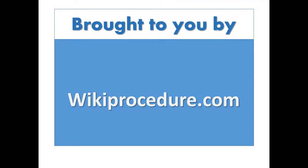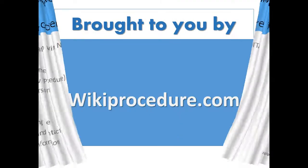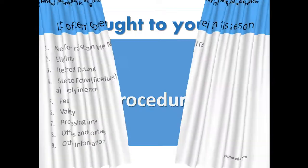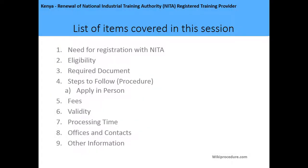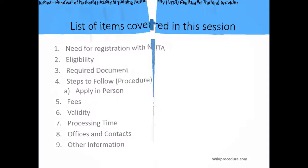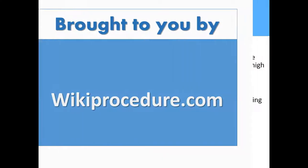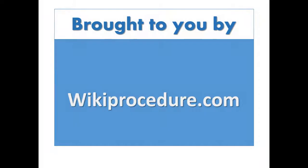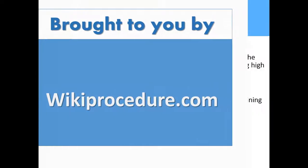We will also cover fees, validity period, the processing time, office location and contact information, and any other information that we may find necessary to help us make the renewal of National Industrial Training Authority registered training provider. Welcome to our presentation today, brought to you by wikiprocedure.com.